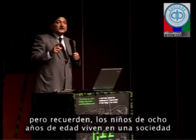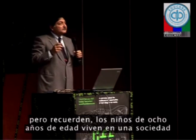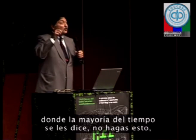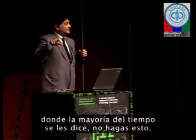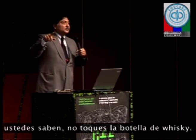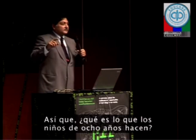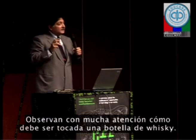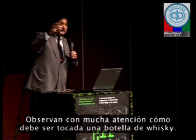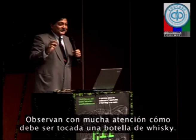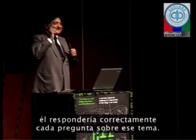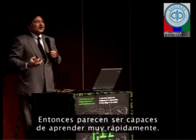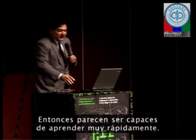This seems counter-intuitive to adult learning, but remember eight-year-olds live in a society where most of the time they are told 'don't do this,' 'don't touch the whiskey bottle.' So what does the eight-year-old do? Observes very carefully how a whiskey bottle should be touched — and if you tested him he would answer every question correctly on that topic. So they seem to be able to acquire very quickly through observation.